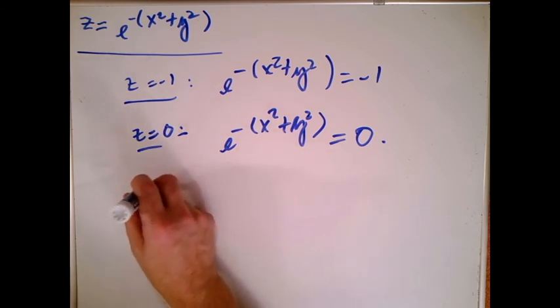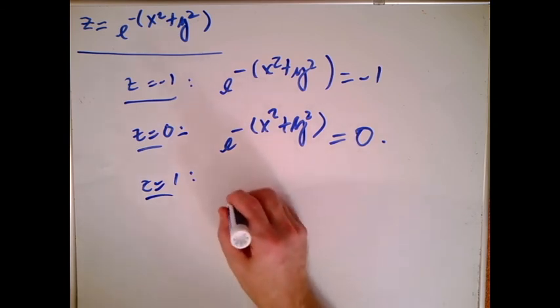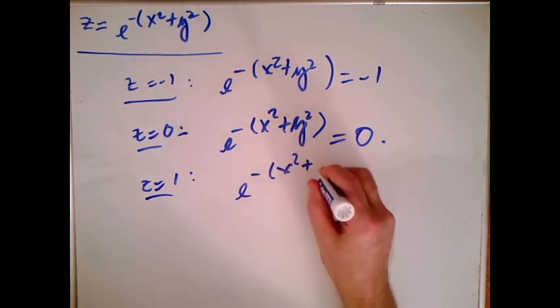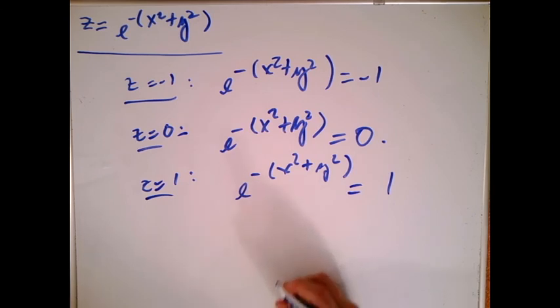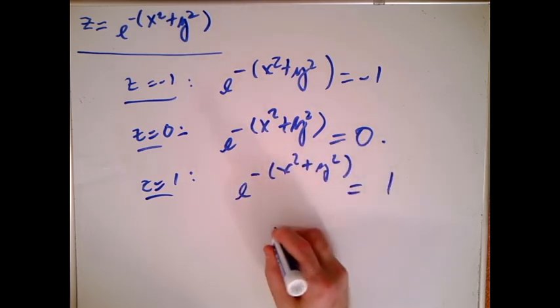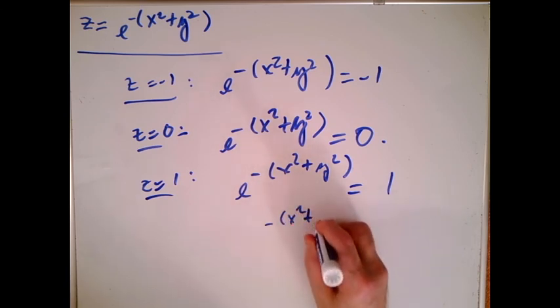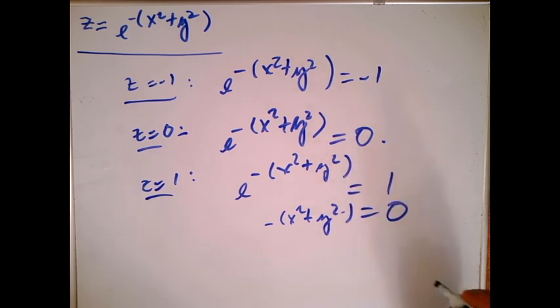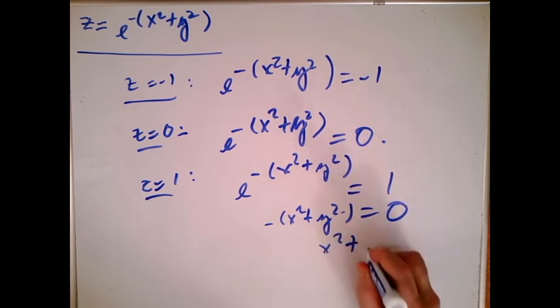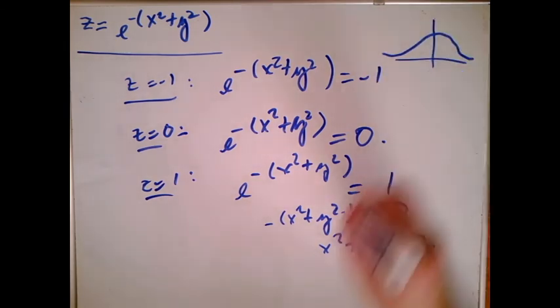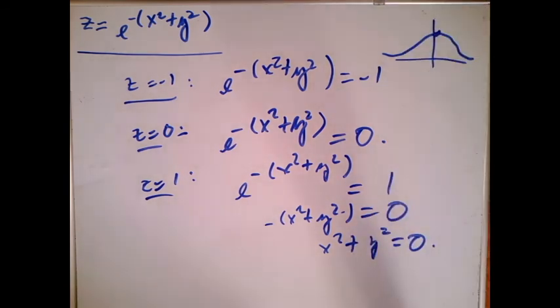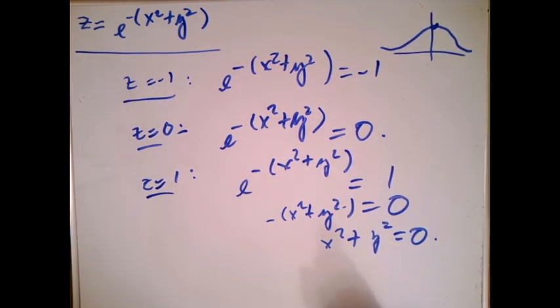If I try chopping at height one, I'm going to get e to the minus x squared plus y squared equals one. What can I raise e to to get one? What I'm going to find out is I'm going to get minus x squared plus y squared equals zero. So I'm going to get x squared plus y squared equals zero. That says if I chop at height one, I only hit one point. By the way, I kind of could have figured that out before because when we were taking cross sections, we kept getting bell curves. And so basically, if you chop at height one, all you're hitting is that top.